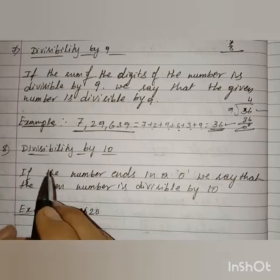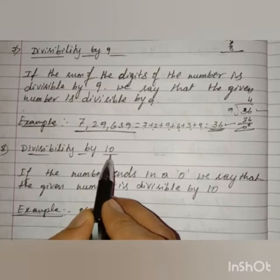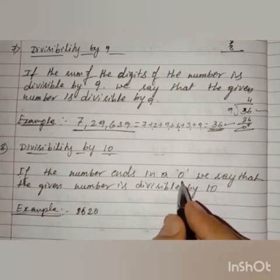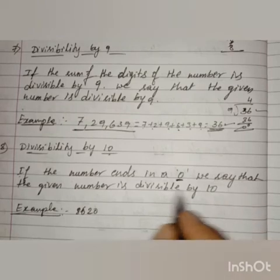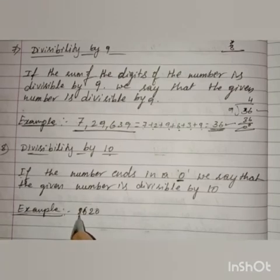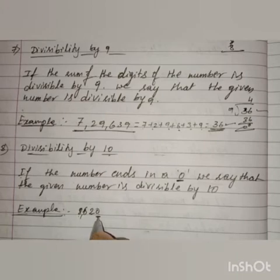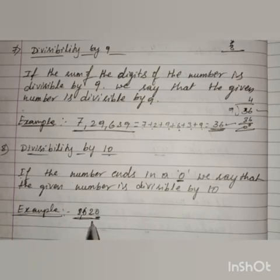The next and final divisibility rule is divisibility by 10. If any number ends in 0 — whether it is a 2-digit, 3-digit, 4-digit, or any digit number — if the last digit is 0, then we say that the given number is divisible by 10. For example, 8620 ends with 0, so the entire number is divisible by 10. Without doing the actual division, we can say this number is divisible by 10.